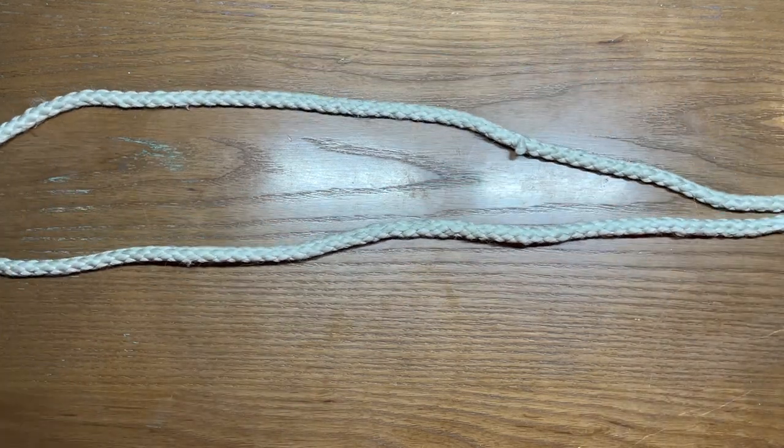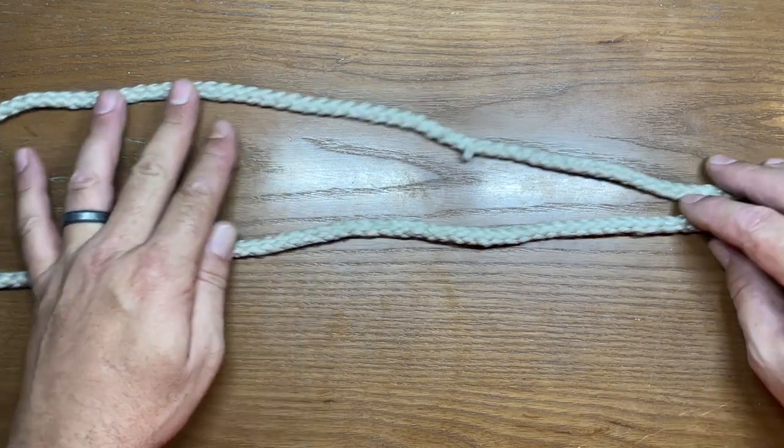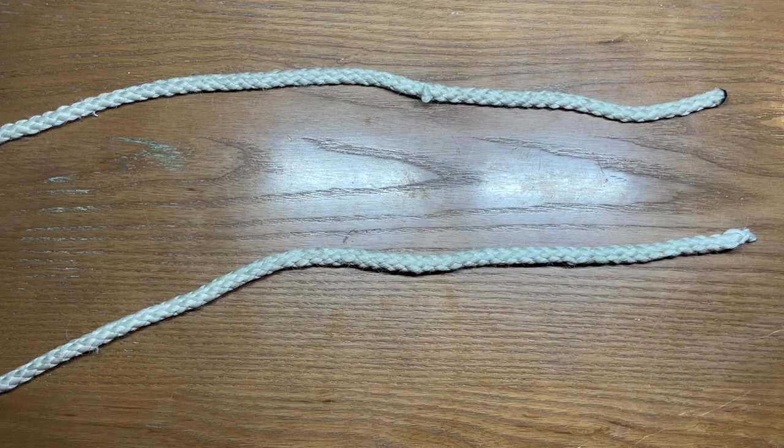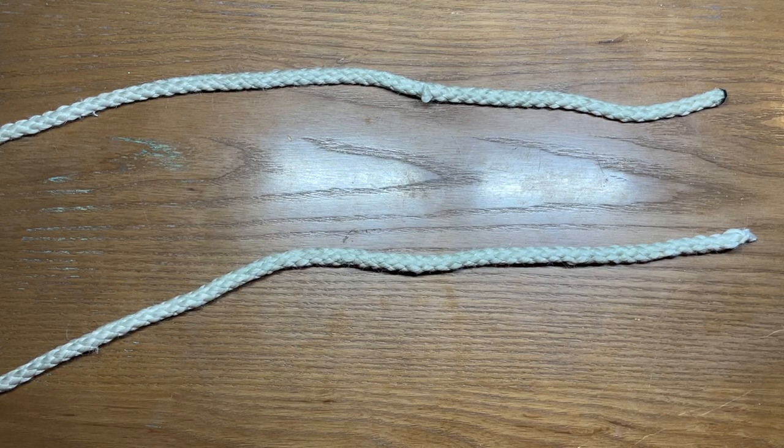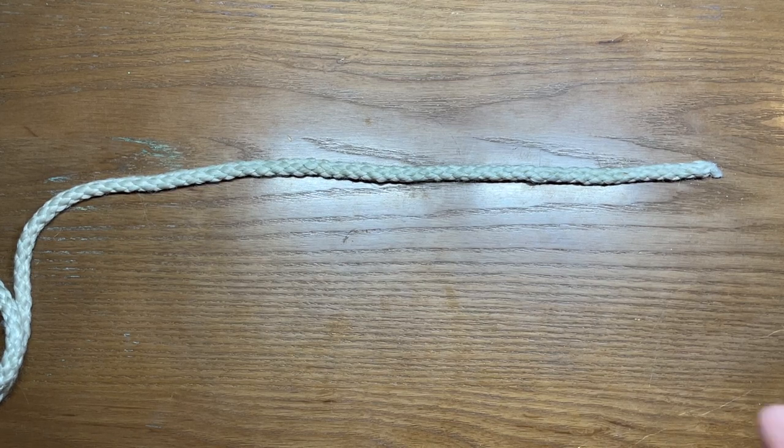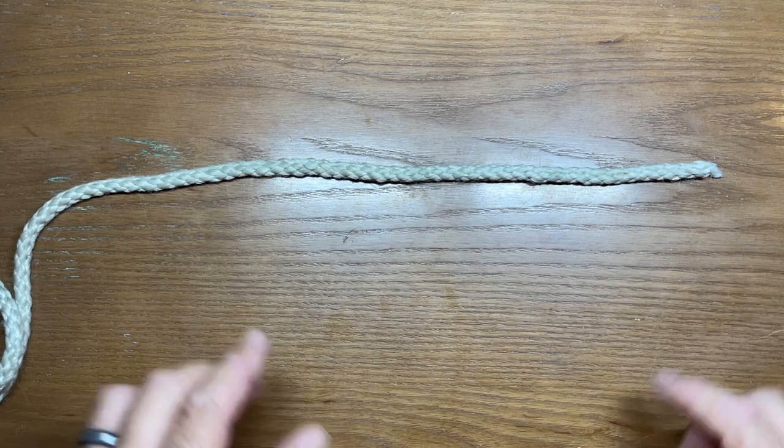We're going to be tying a fixed loop knot on each end of this rope to make our gear tie. The knot we're forming is called the bowline, and the method we're using is called the snap bowline method.